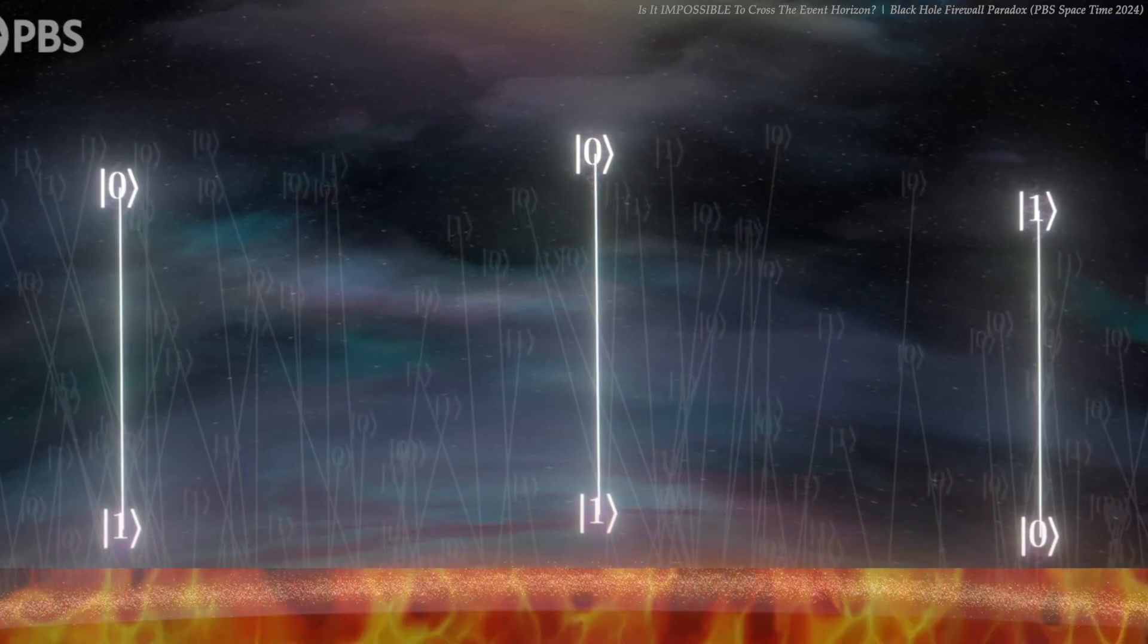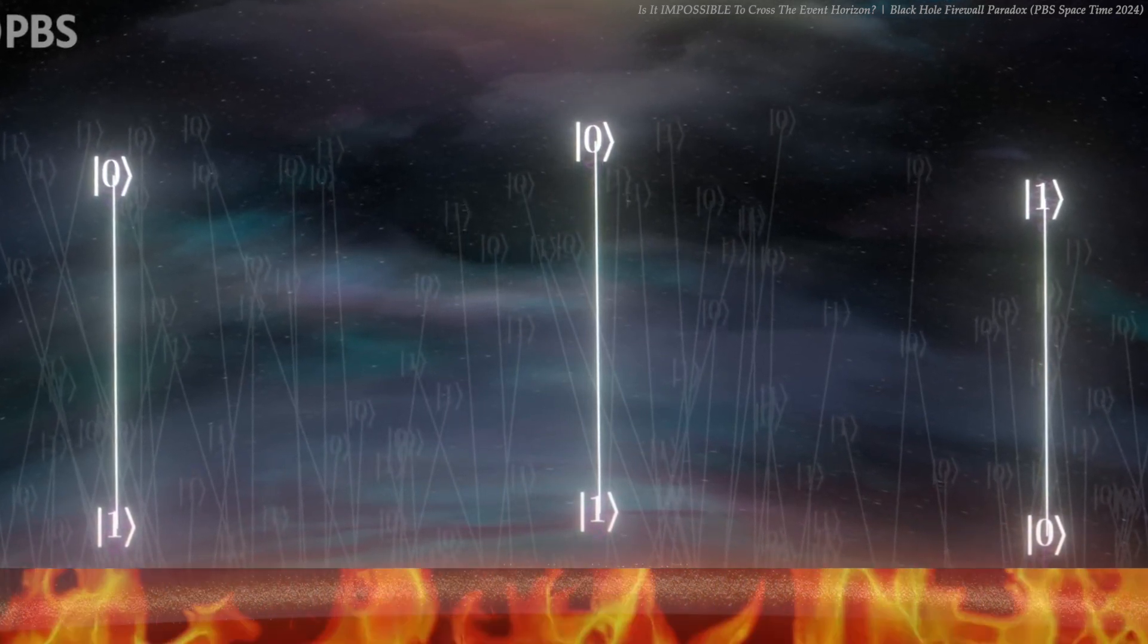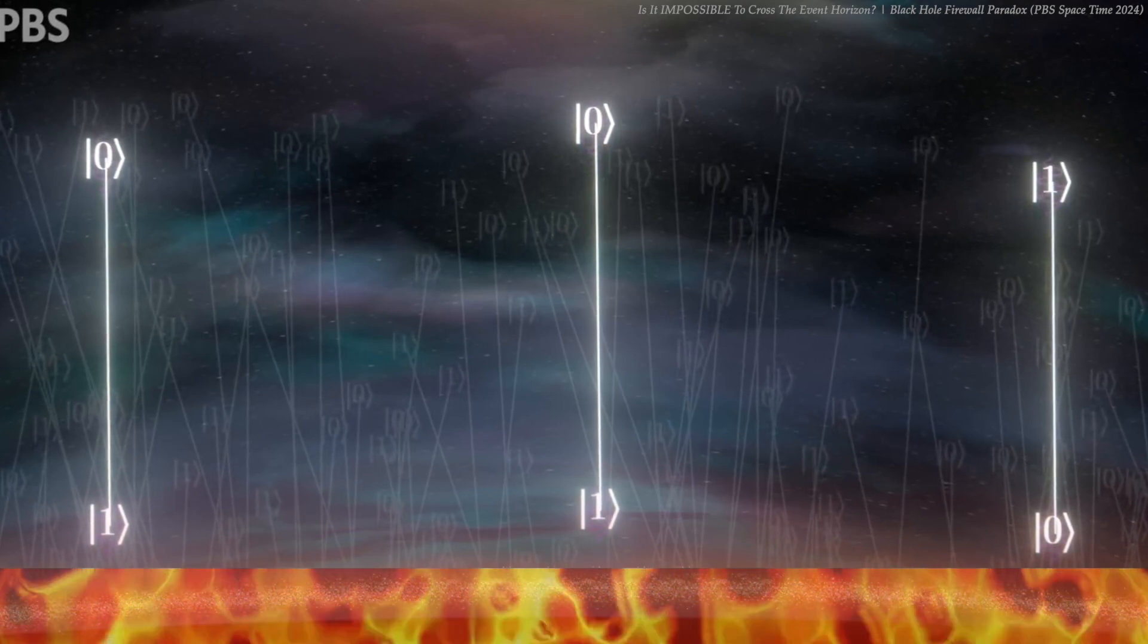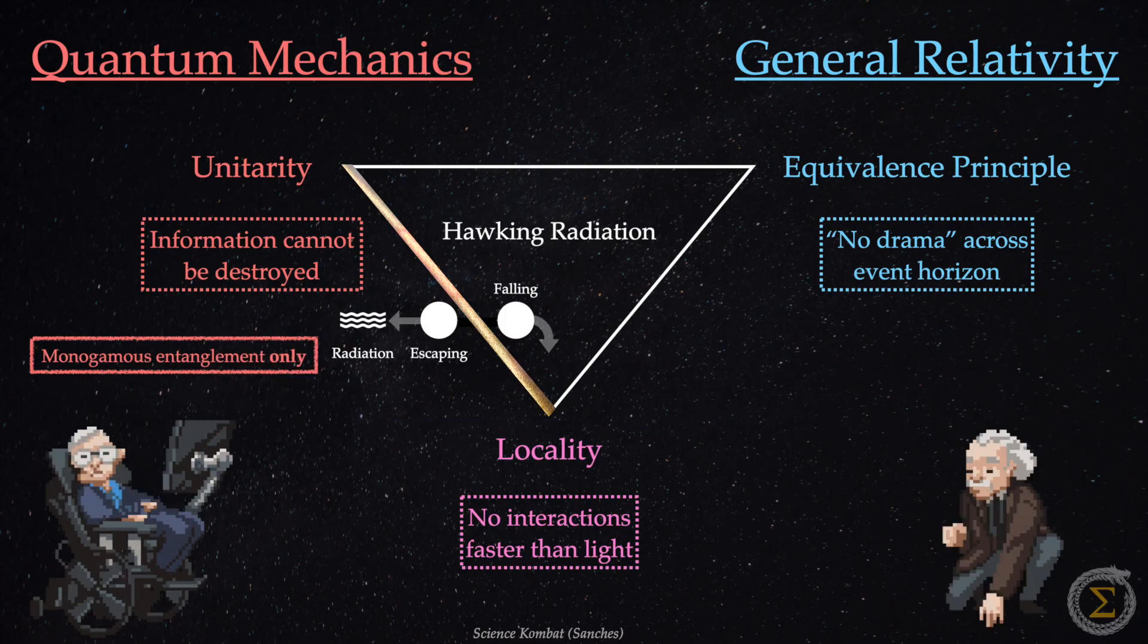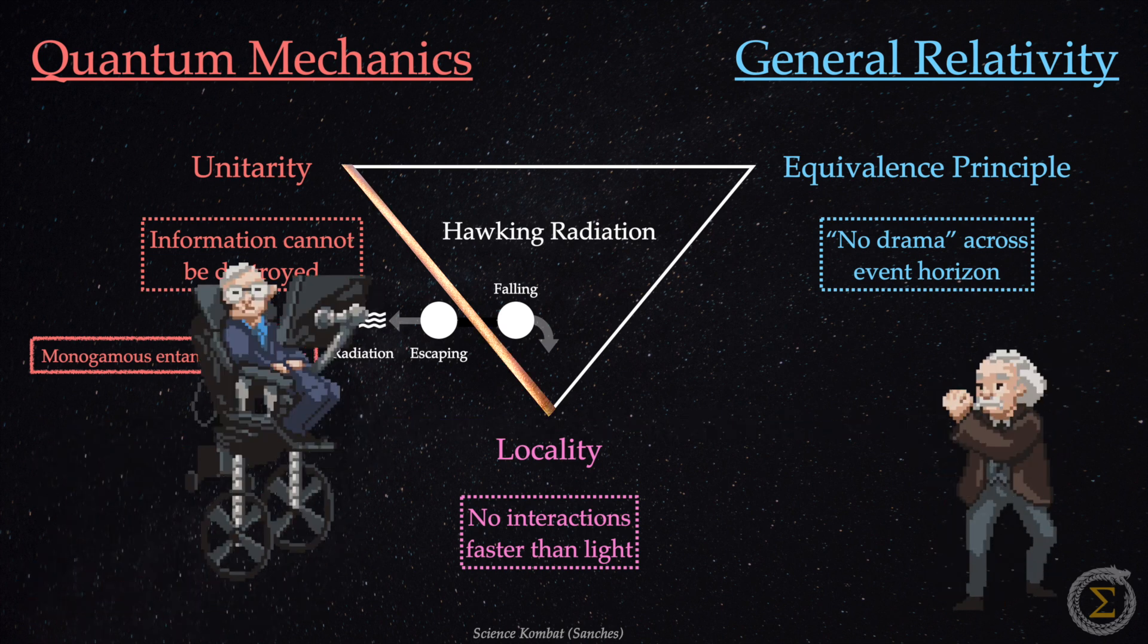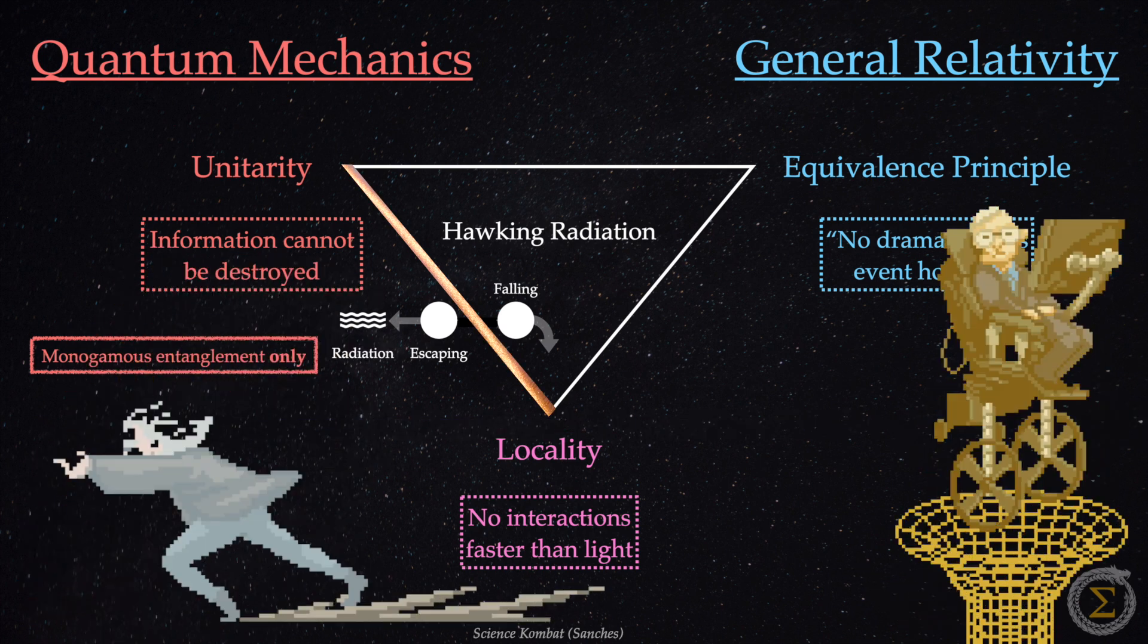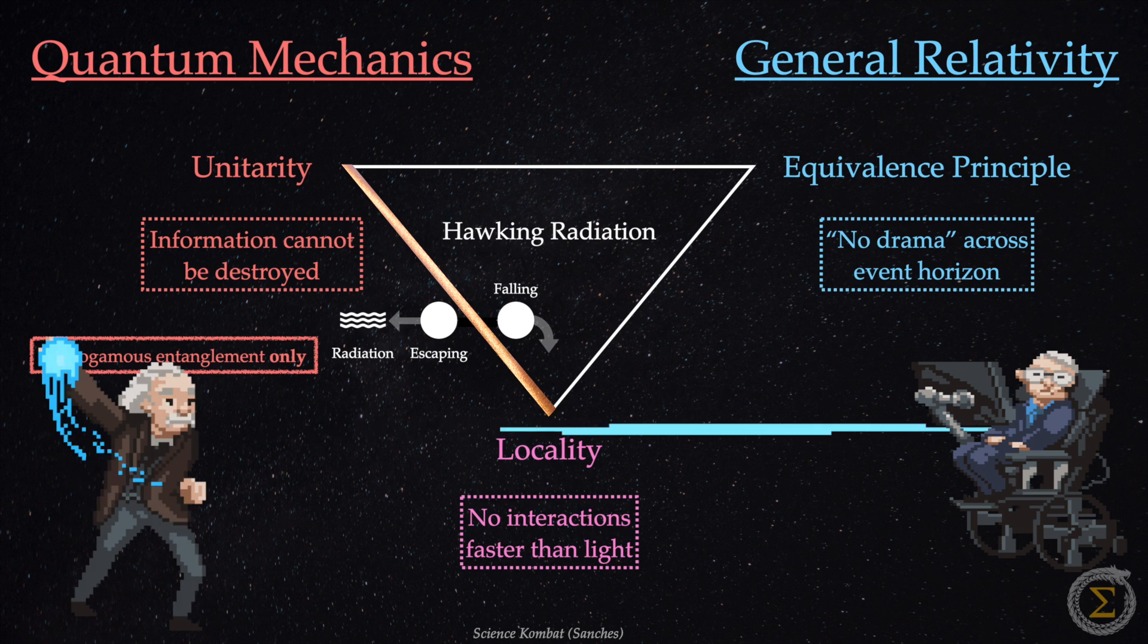This suggests that the singularity, once believed to lie deep within a black hole, might actually sit at the event horizon. Physicists find this idea deeply troubling, as it forces a choice between core principles in QM versus GR. Many physicists refuse to give up a cornerstone of general relativity that freefall is indistinguishable from inertial motion. But firewalls offer a solution to the black hole information paradox. They save QM's unitarity in two ways.